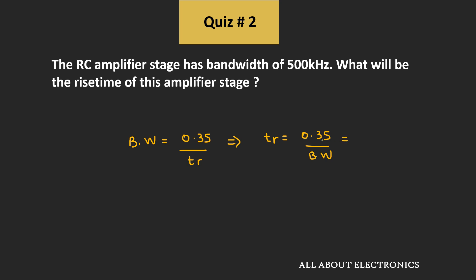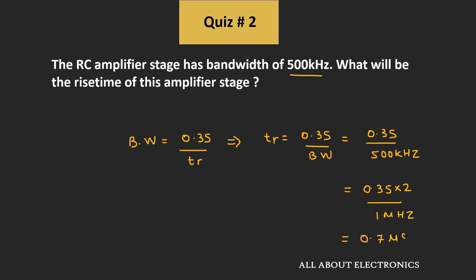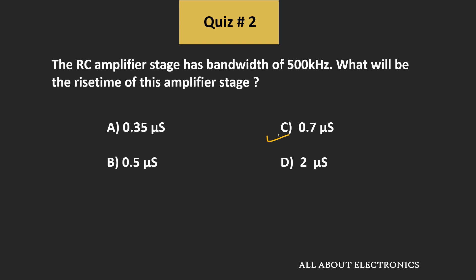Here the bandwidth of this RC amplifier stage is equal to 500 kHz. From this we can say that the rise time is equal to 0.35 divided by 500 kHz, that is equal to 0.35 times 2 divided by 1 MHz. And if we simplify it, then the rise time would come as 0.7 microseconds. So for the given quiz, the answer is C.